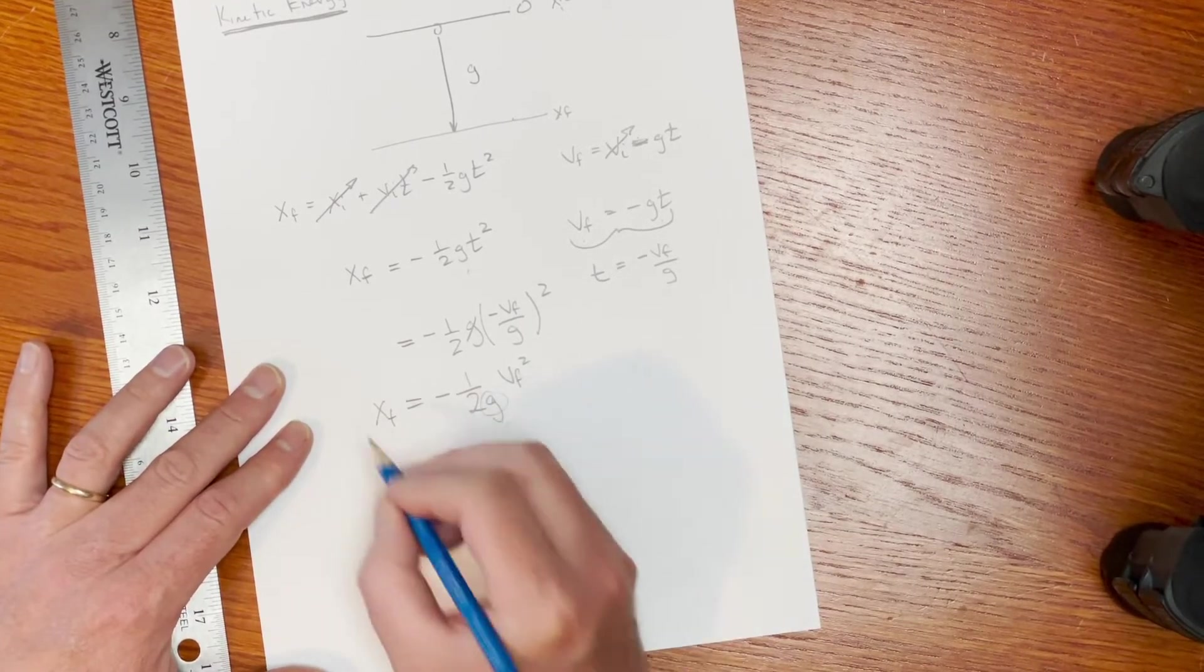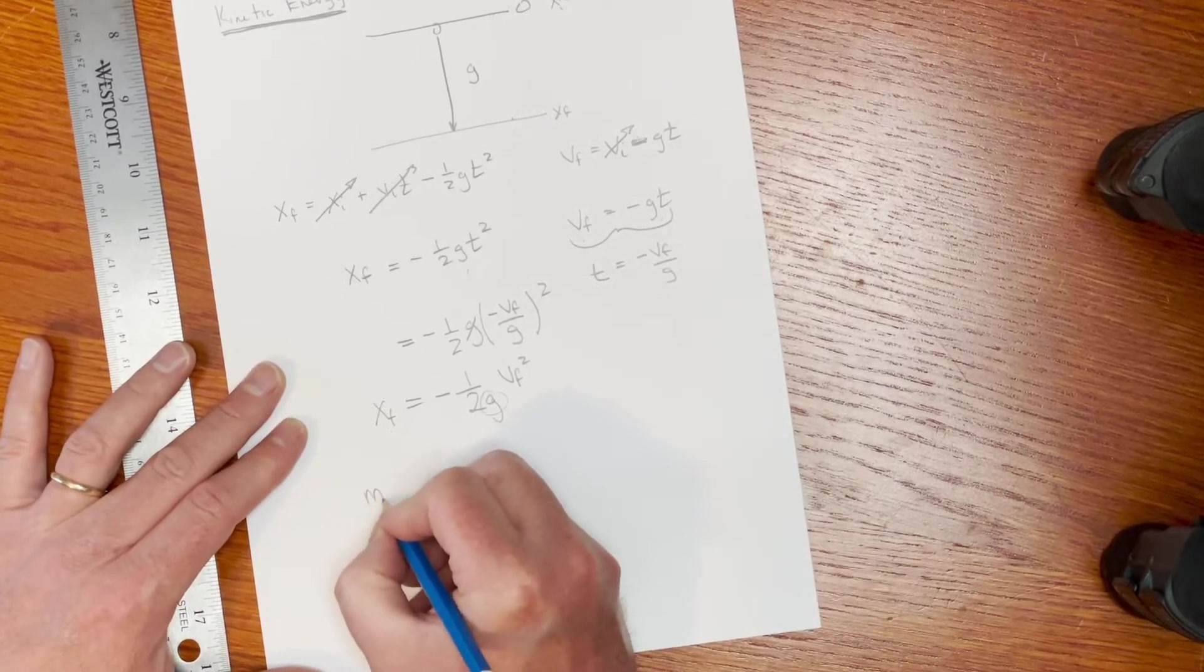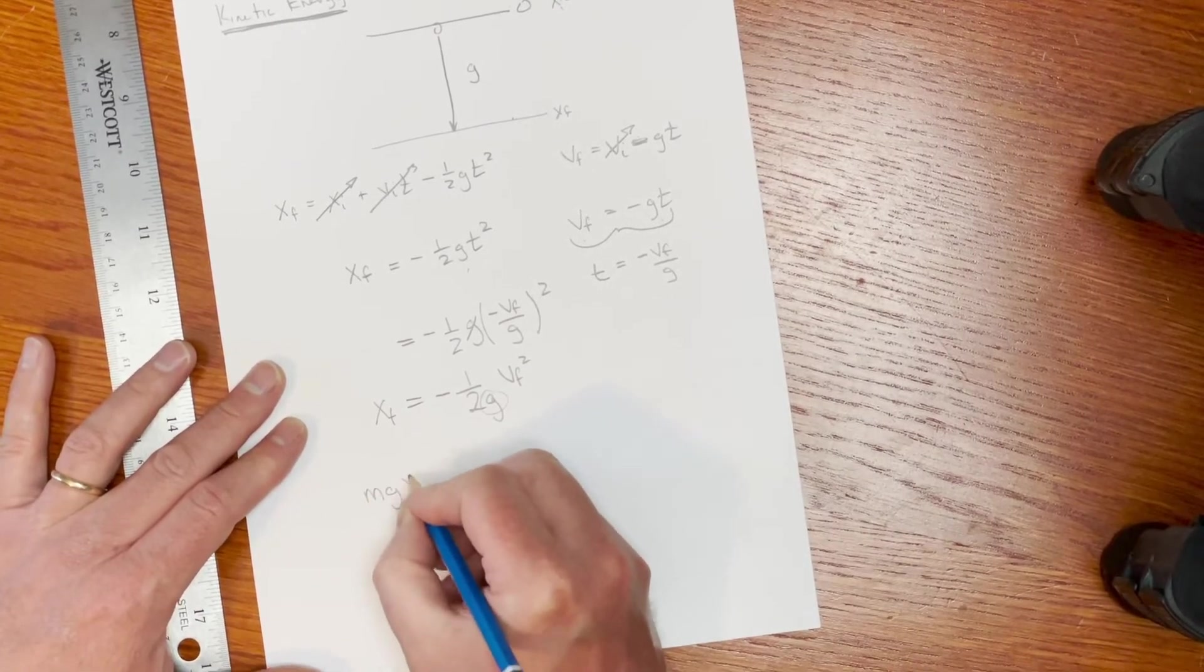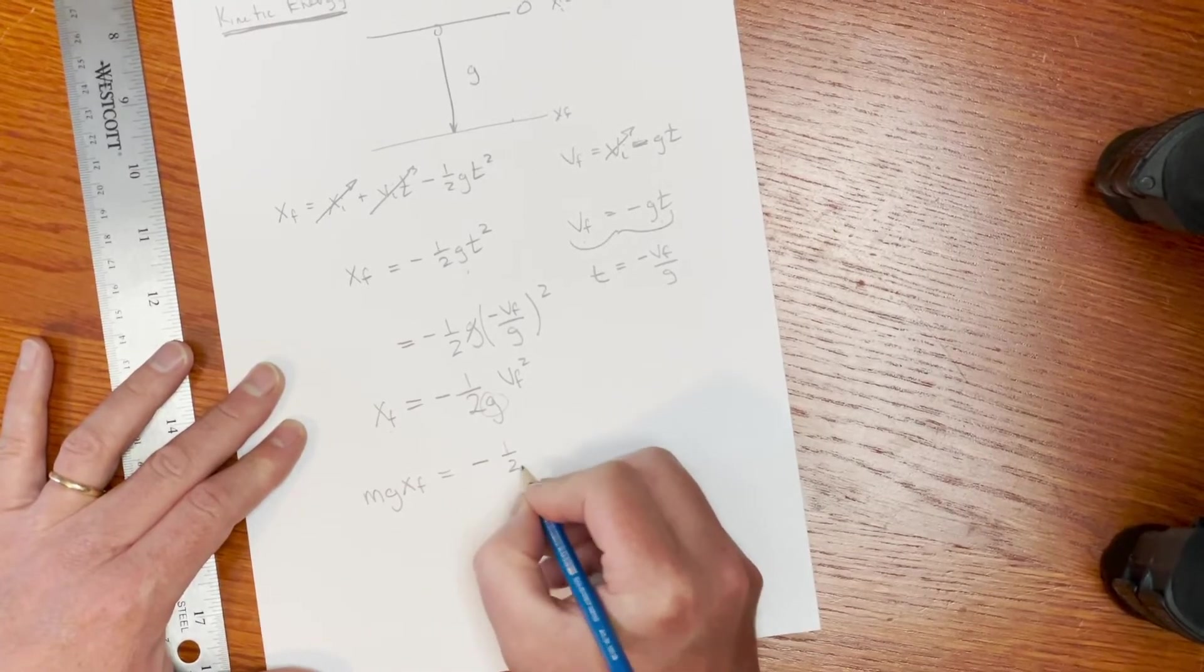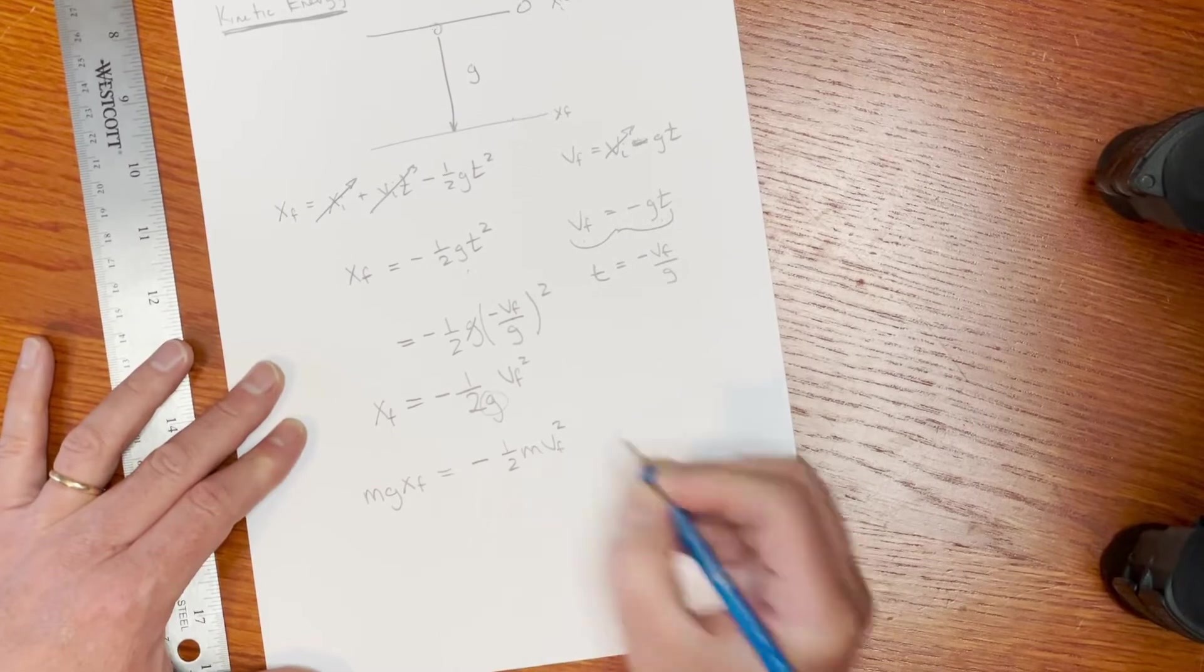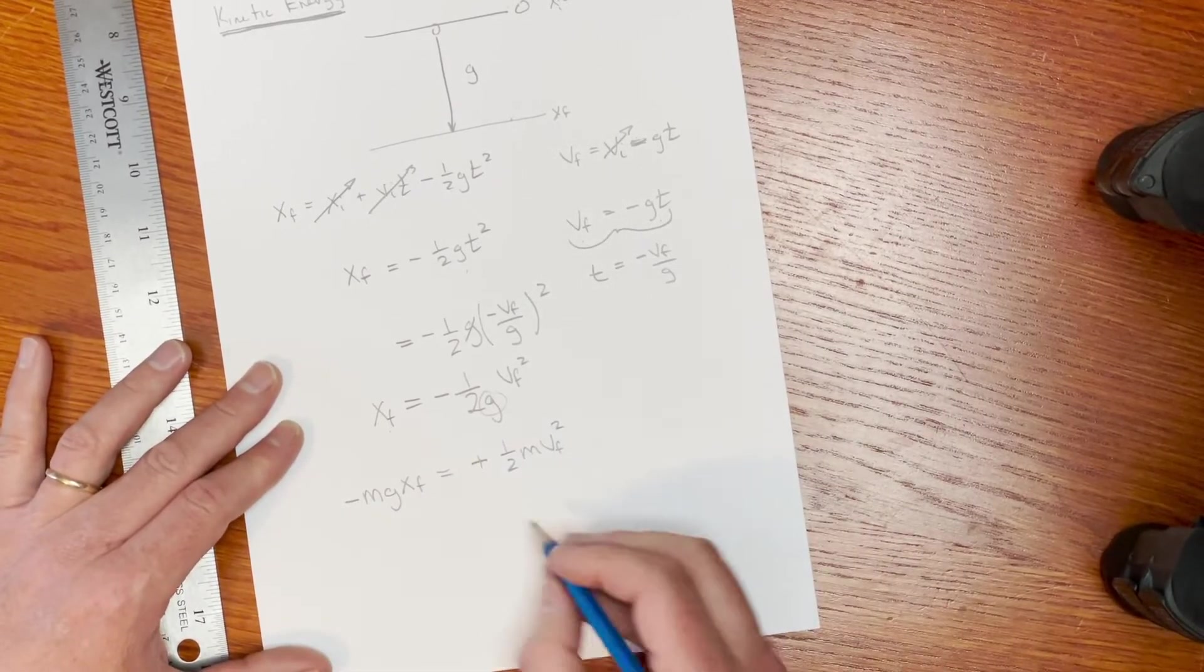So let's explore that a little bit further. What I'm going to do is I'm going to take this g and move it over here and multiply the whole equation by m. So I'm going to get m g x final is equal to minus one half m v squared final. And then I'm going to take this minus sign and move it over here.